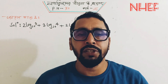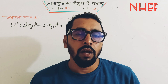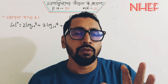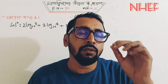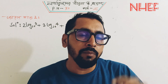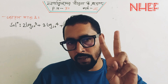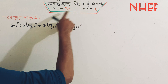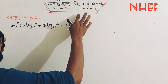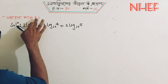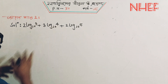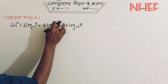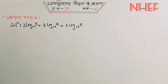This is an extremely important question. The problem is: 2 log base 3 plus 3 log base 4 plus 2 log base 5 plus 31. Most of you will find this to be true.